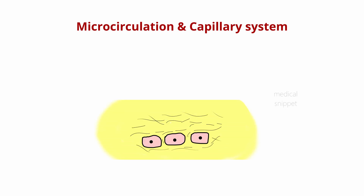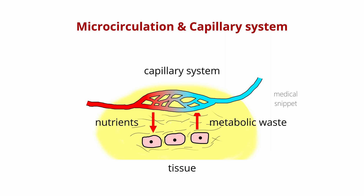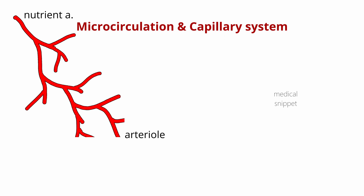Let's start with the microcirculation and capillary system. Microcirculation is the most important part of the circulatory system, as transport of nutrients to the tissue and removal of cell waste occurs. Each nutrient artery that enters the organ branches 6-8 times to form the arterioles, then each arteriole branches 2-5 times to form the capillaries.